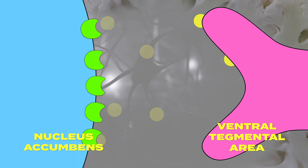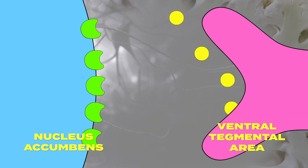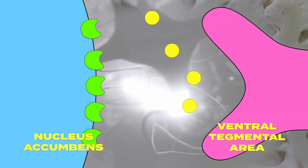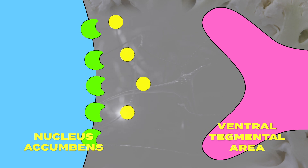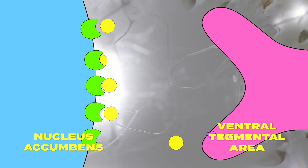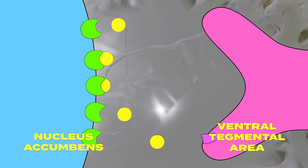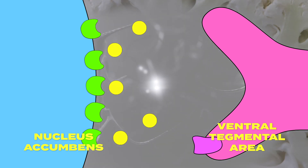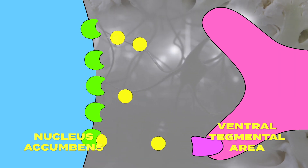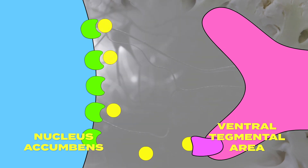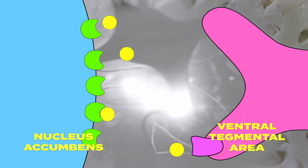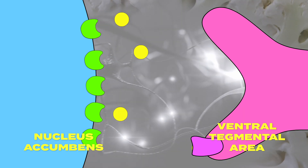It turns out that we can't make enough dopamine to do all this in real time, so we have to recycle some of what we've already used. To do that, the cells of the ventral tegmental area have a reuptake pump — like a vacuum cleaner — that takes back the dopamine after it's been released. Now let's briefly look at the factors that make up dopamine tone.